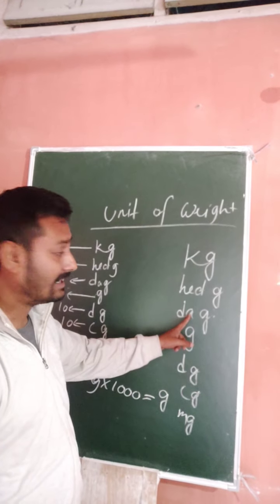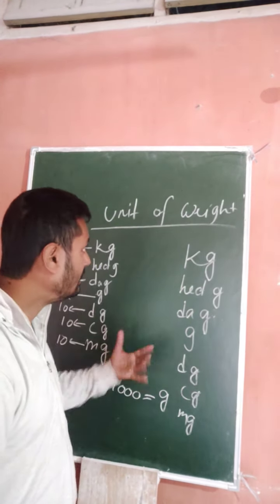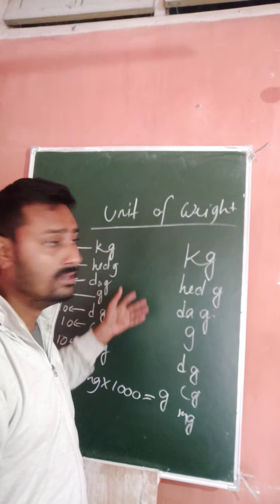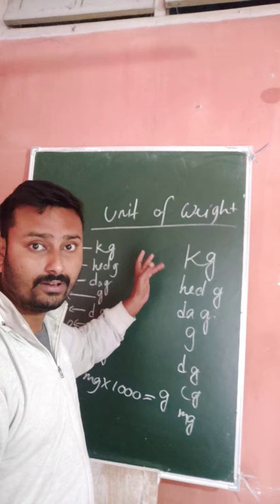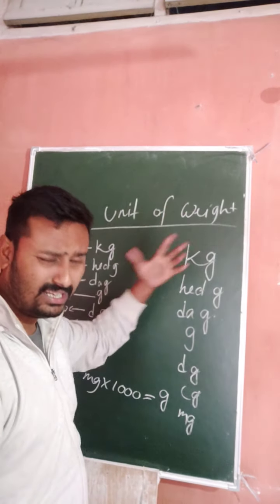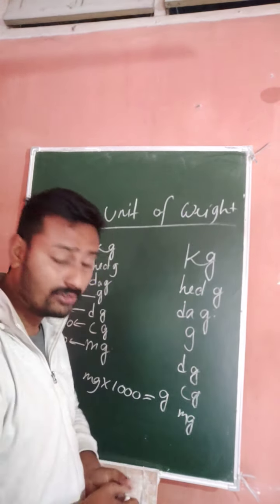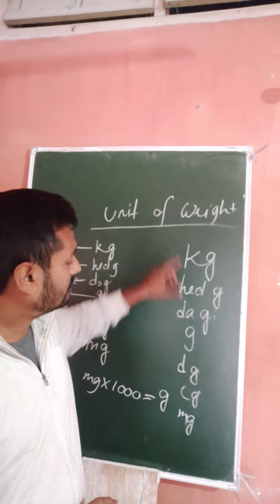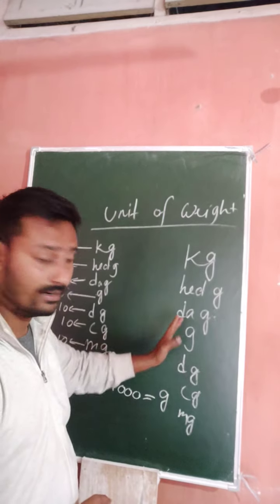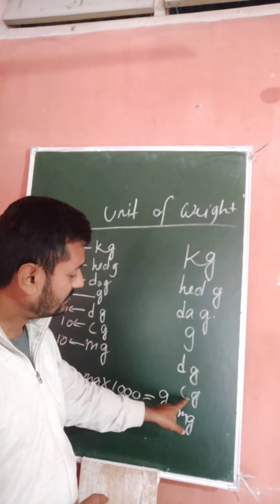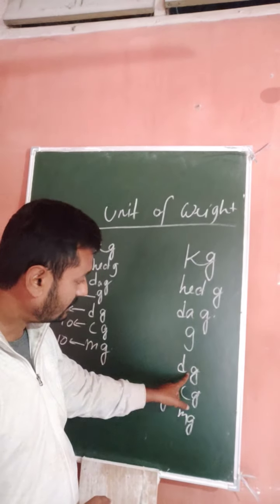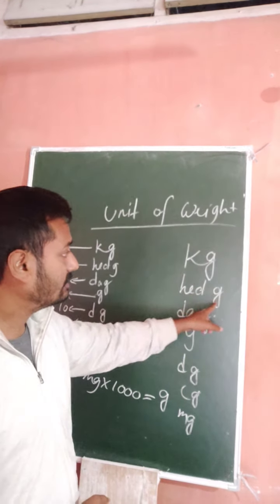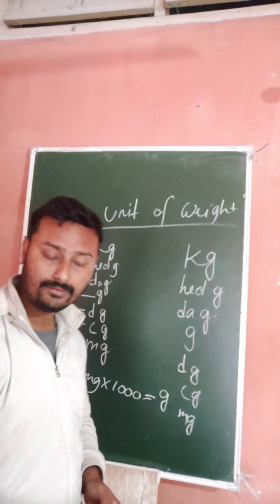The weight units in order are: milligram, centigram, desigram, gram, decagram, hectogram, and kilogram. Similarly, in the case of liters, when you measure the capacity of a bottle or any instrument, the units are: milliliter, centiliter, deciliter, liter, decaliter, hectoliter, and kiloliter.